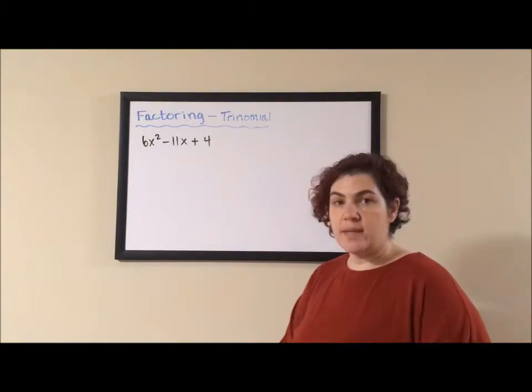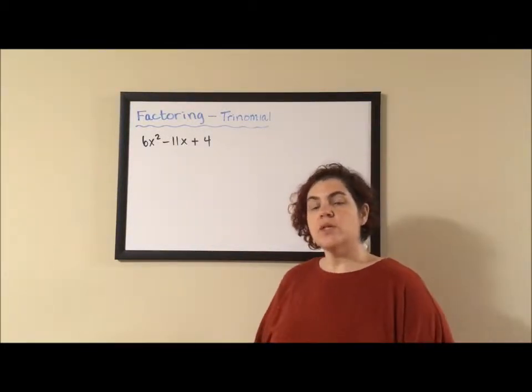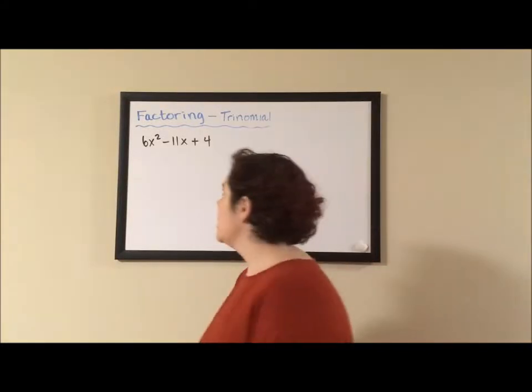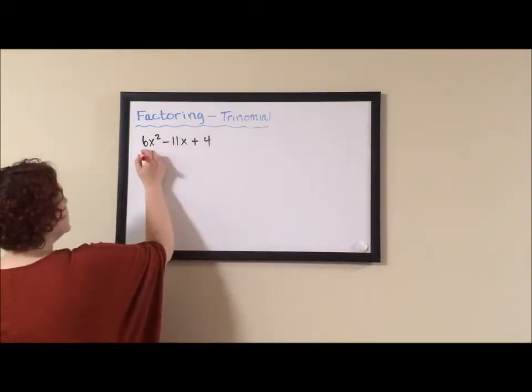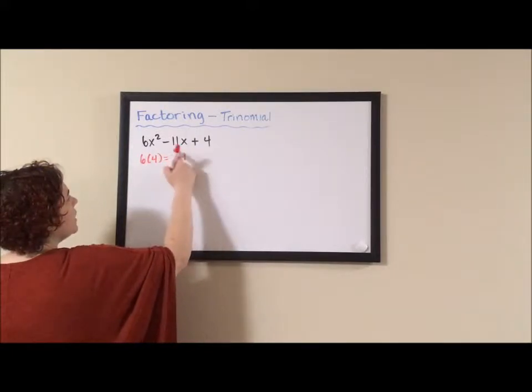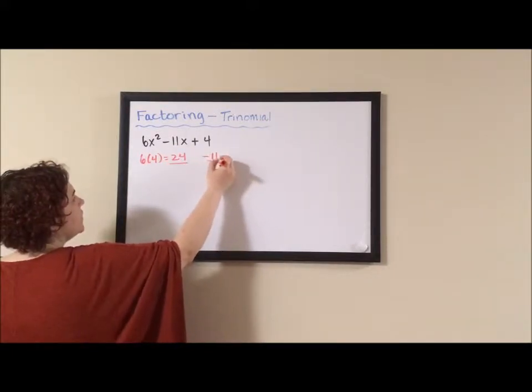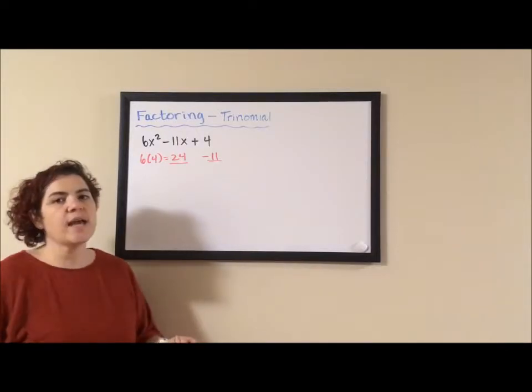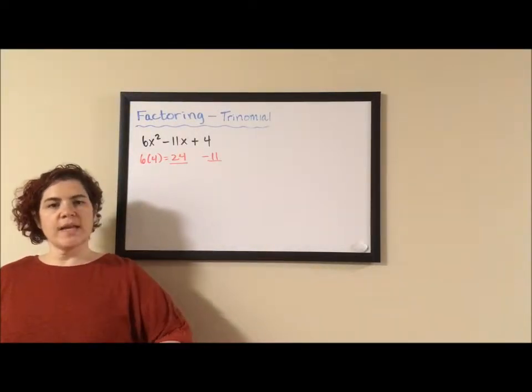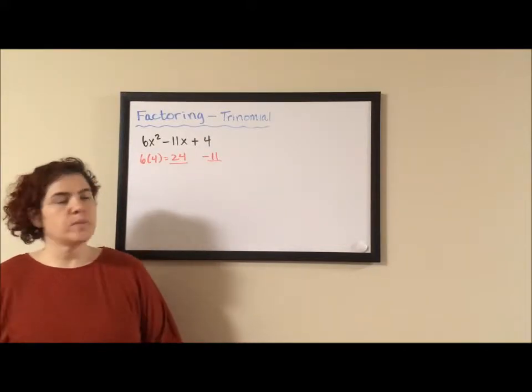So I'm going to start off with AC. AC is named because you multiply your A coefficient times your C coefficient. 6 times 4 is 24. And then you look at your B, which is negative 11. And at this point you do the exact same thing you would do if A were equal to 1. Find two numbers that multiply to AC and add up to B.